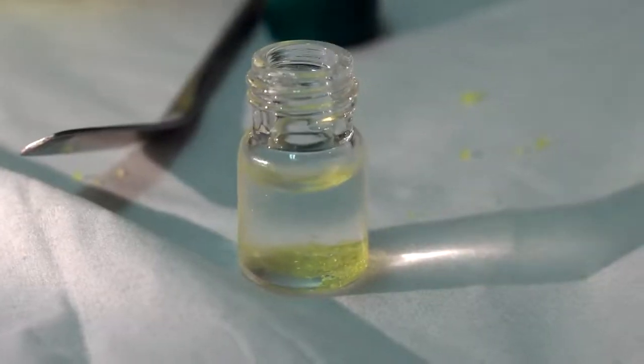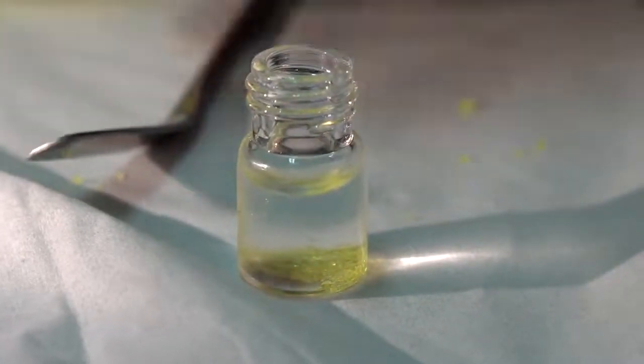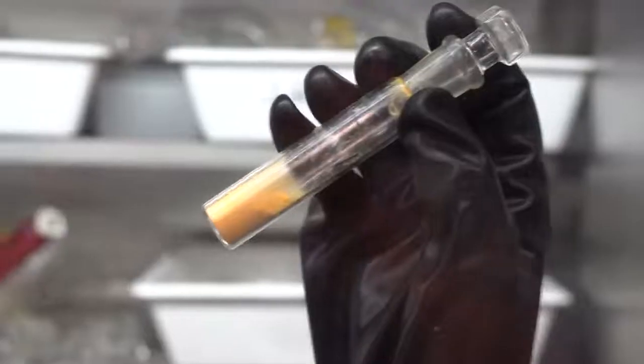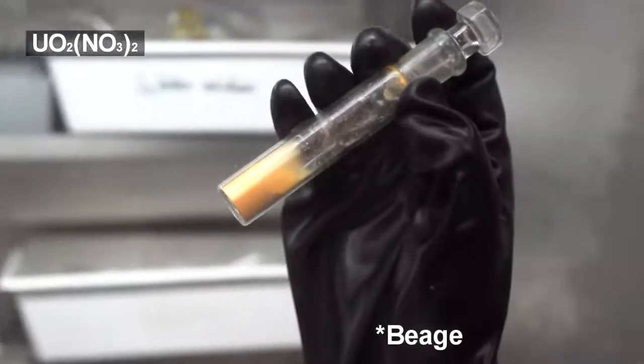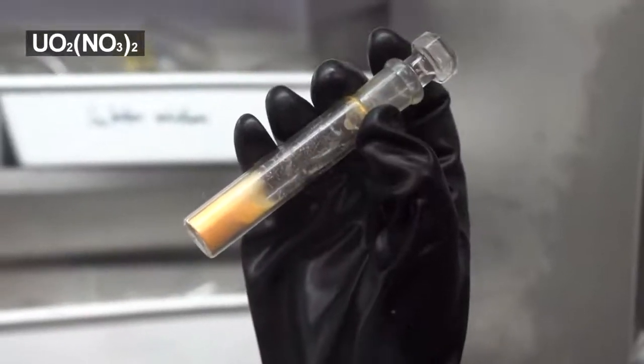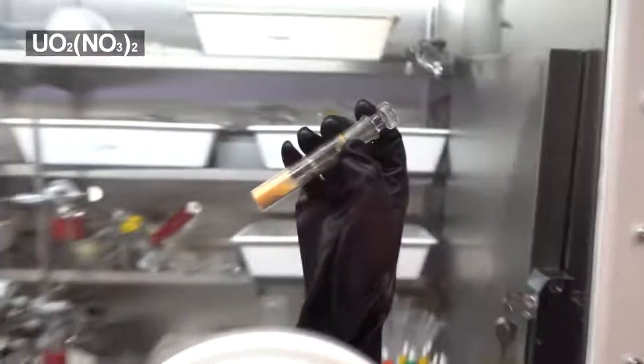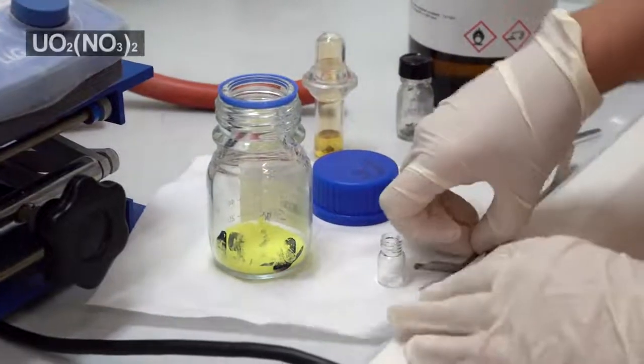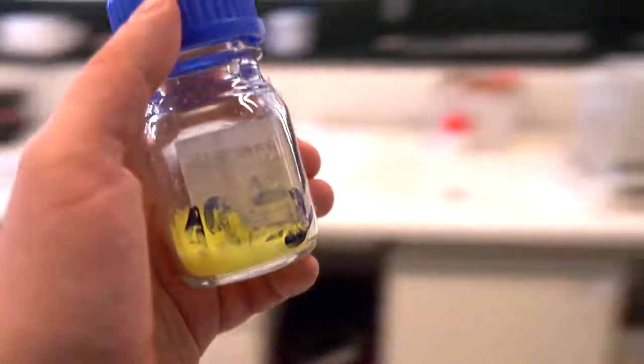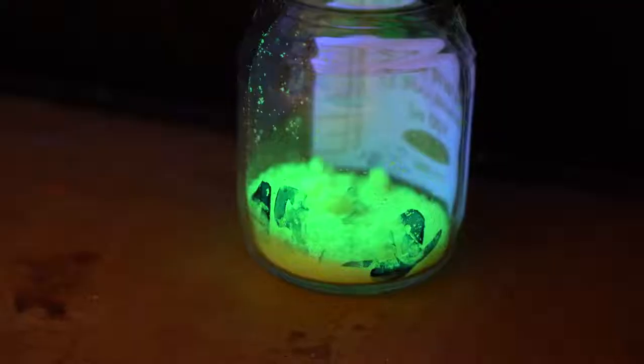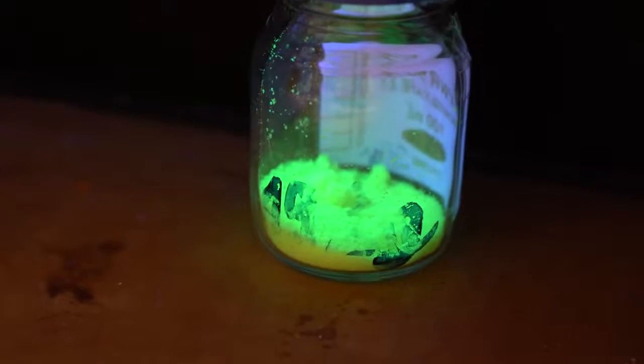However, the oxidation state of uranium can be increased to plus six oxidation state. For instance, dry uranyl nitrate is a beige powder. In this form, it's most frequently used for experiments. When exposed to air, this compound absorbs water very well and turns into beautiful hexahydrate crystals, which glow in ultraviolet light very well.